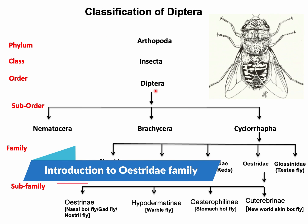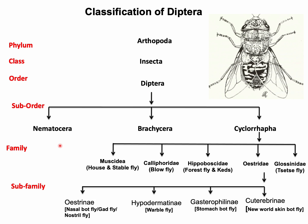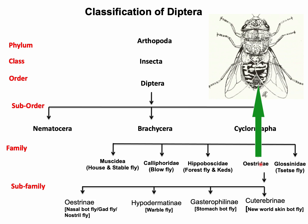This is the zoological classification of different flies. We study different veterinary important insects under the suborder Nematocera, Brachycera, and Cyclorrhapha. Under the suborder Cyclorrhapha, flies are commonly known as nasal bot fly, warble fly, or stomach fly. These flies are moderately large, bee-like flies with vestigial or non-functional mouthparts. Due to rudimentary mouthparts, adult flies cannot feed but can only imbibe fluid. These flies have small eyes located in a large intraocular space.